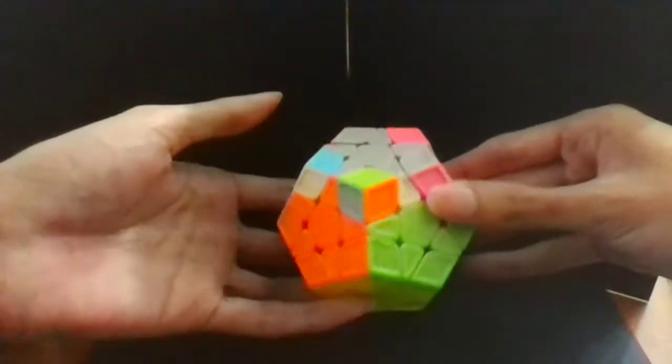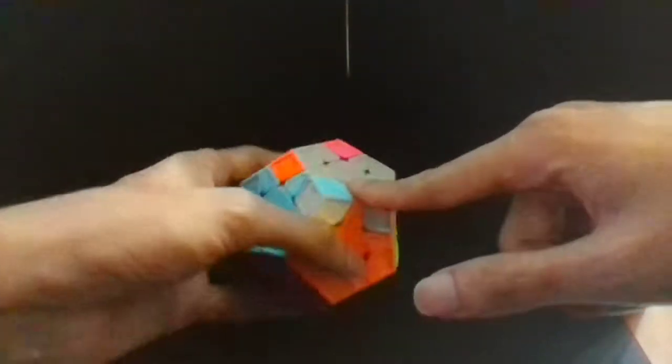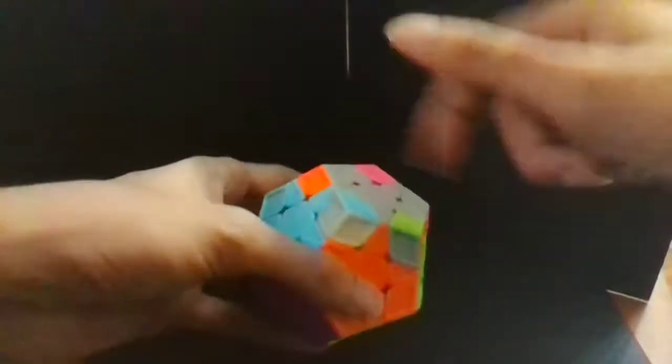Okay, so here we see these two edges are relatively easily commuted with respect to each other. And we can insert this corner into here with a commutator.